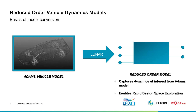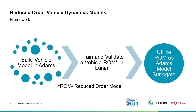In this video, we'll demonstrate the workflow to create a reduced order model from a transient vehicle dynamic simulation in ADAMS. We'll use Lunar from the CADLM OTC portfolio to generate and validate the reduced order model. The reduced order model captures the dynamics of interest from a high fidelity ADAMS model and predicts these transient dynamic effects in seconds. The workflow includes steps for training the reduced order model based on a solution dataset from ADAMS and then validating its predictions.